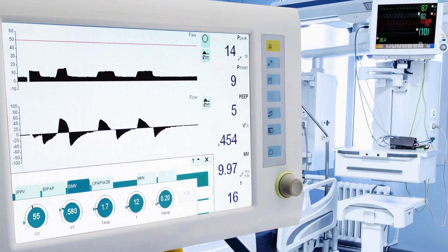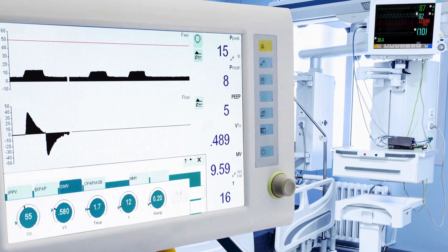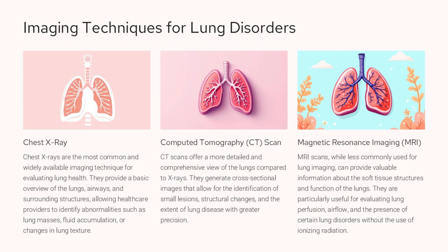Chest x-rays are the most basic and widely available imaging technique for evaluating lung health, providing a general overview of the lungs, airways, and surrounding structures, and helping identify abnormalities like lung masses, fluid buildup, or changes in lung texture. CT scans offer a more detailed and comprehensive view, generating cross-sectional images that allow identification of small lesions, structural changes, and the extent of lung disease with greater precision. MRI scans, while less commonly used for lung imaging, can provide valuable information about soft tissue structures and function, and are particularly useful for evaluating lung perfusion, airflow, and certain lung disorders without ionizing radiation.